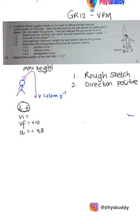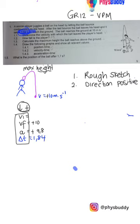The question says after the last bounce the ball takes 1.84 seconds to reach the ground, so delta t is 1.84 seconds. Now I'm going to look at my data sheet and choose an equation that has these four quantities.